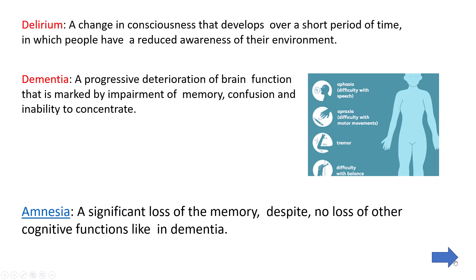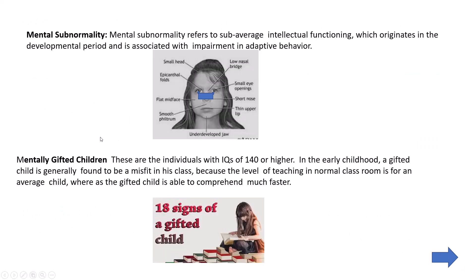Next is alteration in intelligence, which includes subnormal intelligence and above-normal (gifted) intelligence. In mental subnormality, intelligence is very poor. These children show physical features such as a small head, low nasal bridge, small eye openings, and a short nose. Mentally, they are also underdeveloped — they have reading problems, writing problems, language issues, and memory issues. They can be classified into mild, moderate, and severe categories based on their capability.